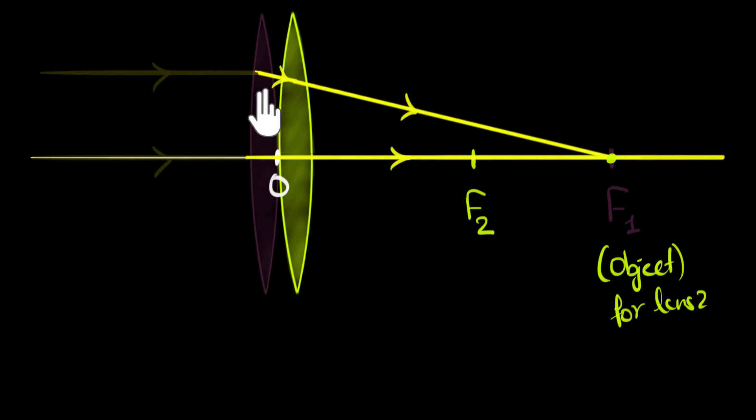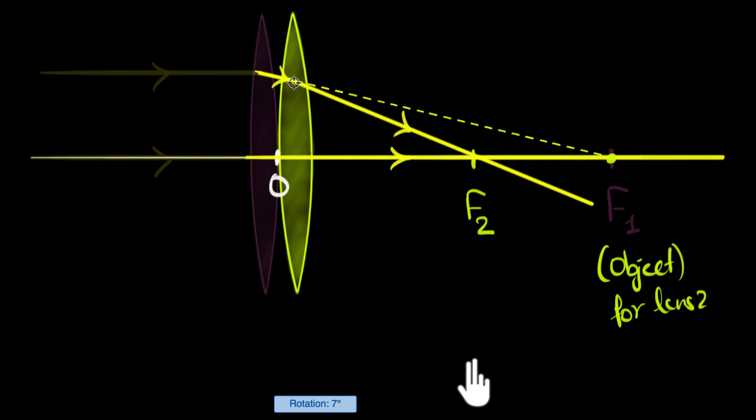Now, if the incoming rays were parallel, those rays of light would have been converged at this point. Since the incoming rays themselves are converging, they will get converged even closer to our lens. Can you see that?